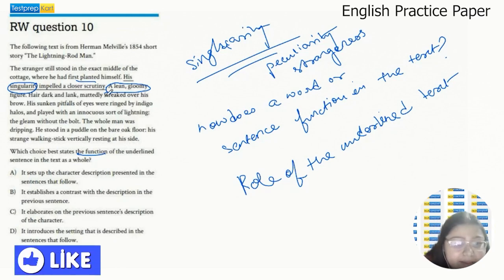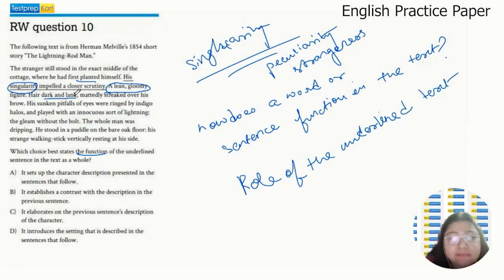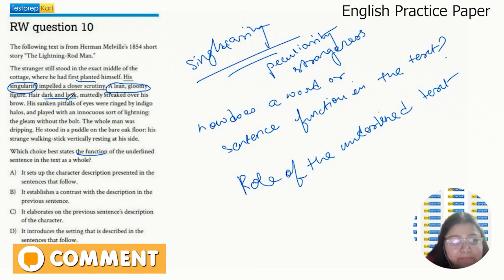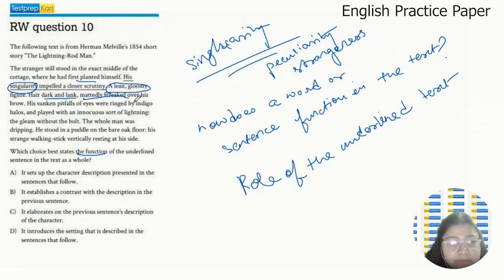His hair dark and lank. So lank means the hair didn't have any volume. It was just lying flat, mattedly streaked over his brow. It was falling over his eyes, his hair.